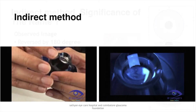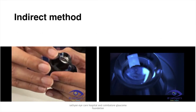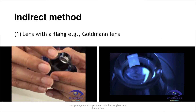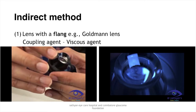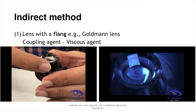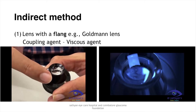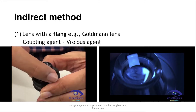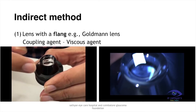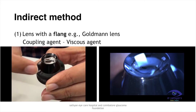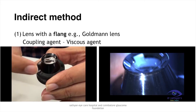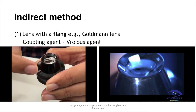In the indirect method, the lens with a flange — for example, a Goleman lens — can be used with a viscous agent. On the left-hand side video, the gross appearance of the flange is demonstrated, and on the right-hand side of the video, the microscopic appearance of the flange is seen.